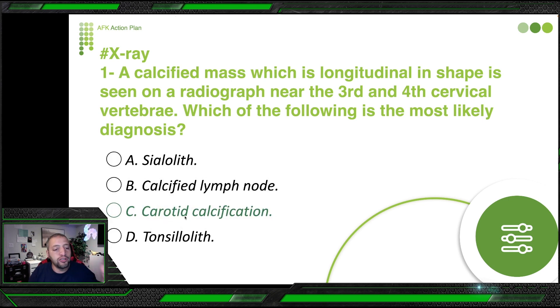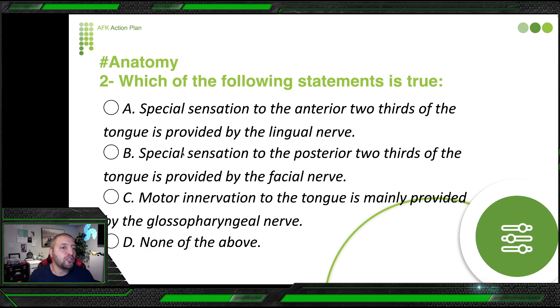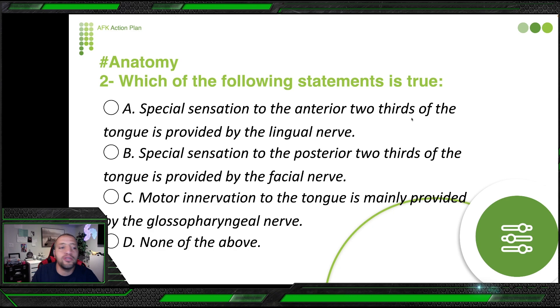So here we speak about a calcified mass vertically oriented between the third and fourth vertebrae — the answer is carotid calcification.